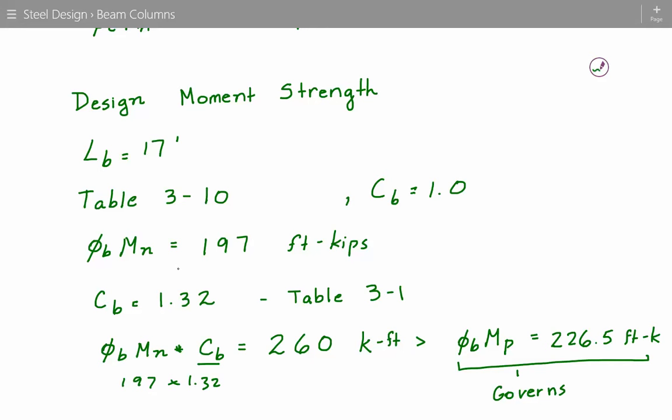And then we compare that value to the plastic moment strength, which we can calculate as equal to the resistance factor times Fy times the plastic modulus. And so we see that the plastic strength is smaller than the value that we calculated. The 226.5 kip feet value is smaller than 260.